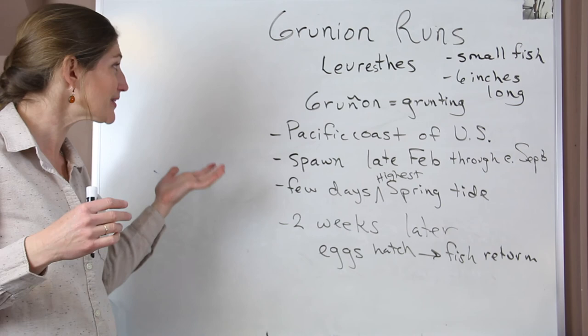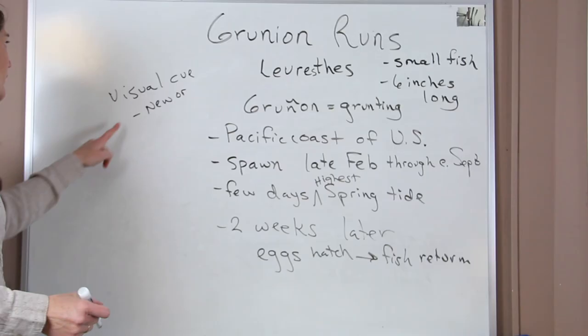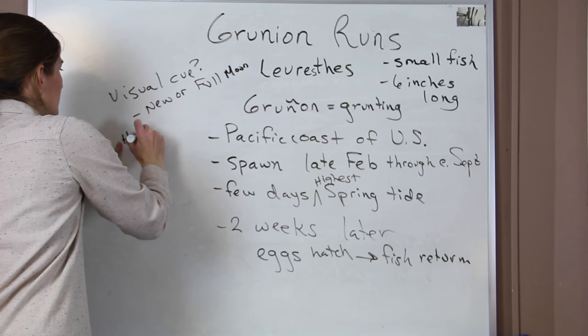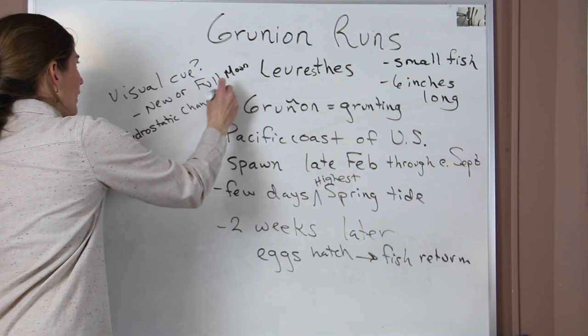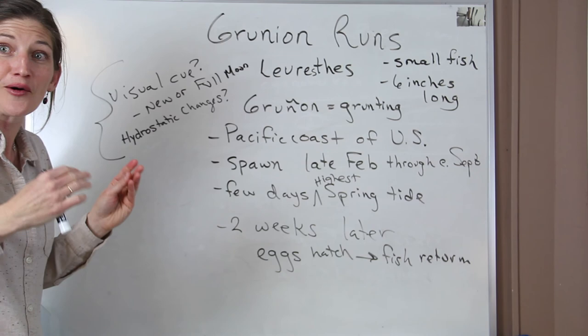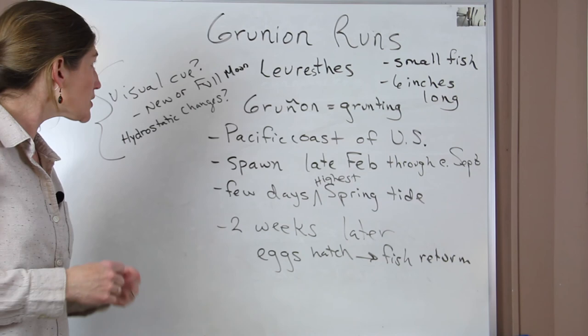It's not actually known exactly how the grunion know when to spawn. Some think they're looking for a visual cue related to the new or full moon. The second possibility is looking at hydrostatic changes related to pressure with the incoming and outgoing tides. Those are the two possible explanations, but nobody knows — so if you want to get into marine biology, this could be a fun topic to focus on. That's all I have for some examples of how life exists in and around the tidal zones and how the tides affect the marine communities.